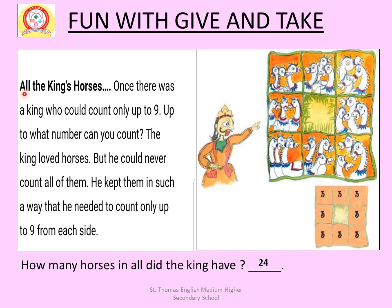Here is a story called 'All the King's Horses.' Once there was a king who could count only up to 9. The king loved horses but he could never count all of them. He kept them in such a way that he needed to count only up to 9 from each side. He arranged the horses so that from all sides the count would be 9.